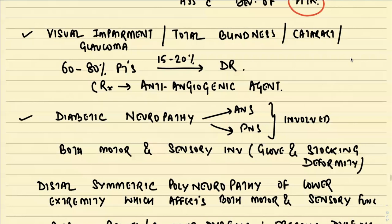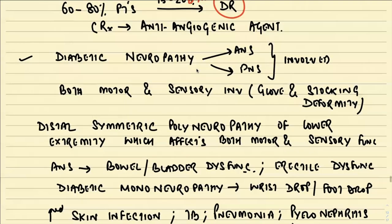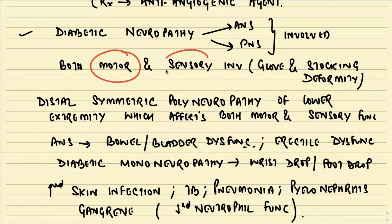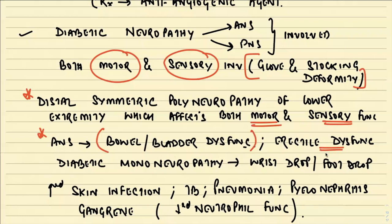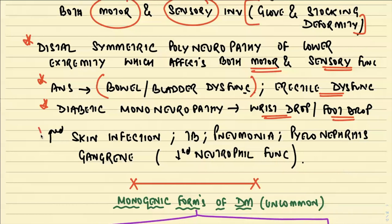Visual impairment, blindness, cataract, and glaucoma will be seen. Around 60 to 80% of patients will develop diabetic retinopathy within 15 to 20 years; treatment is anti-angiogenic anti-VEGF agents. Diabetic neuropathy involves both the ANS and PNS with motor and sensory involvement, leading to a classical glove and stocking deformity. The most common type is distal symmetric polyneuropathy of the lower extremity. Autonomic involvement leads to bowel/bladder dysfunction and erectile dysfunction. These individuals also have increased incidence of skin infection, tuberculosis, pneumonia, pyelonephritis, and gangrene due to reduction in neutrophil activity.